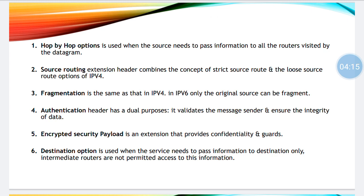Coming to source routing, it combines the concept of strict source route and loose source route of IPv4. Strict source route means whatever route has been decided, that route has to be used. Loose source route means whatever route was decided initially, but if that route has traffic, some other route can be used. Source routing combines both facilities of strict source route and loose source route.